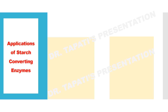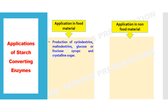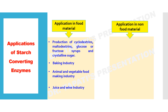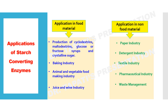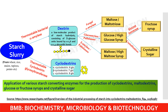Starch converting enzymes, also called amylolytic enzymes, are used in different food and non-food applications. In the food industry they are used for the production of cyclodextrins, maltodextrins, glucose, high-fructose corn syrup, and crystalline sugar, as well as in baking, animal and vegetable food making, and juice and wine industries. For non-food applications they are used in the paper, detergent, textile, and pharmaceutical industries, in waste management, and for biofuel production.